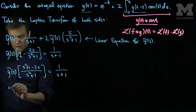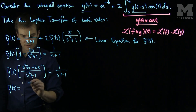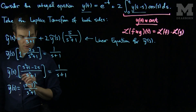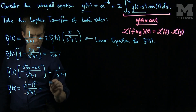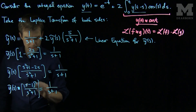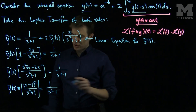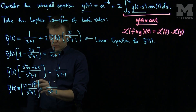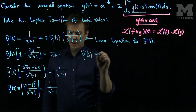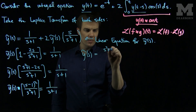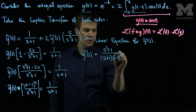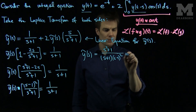We can simplify this. The numerator s squared plus 1 minus 2s factors as s minus 1 quantity squared. So y-tilde of s times s minus 1 squared over s squared plus 1 equals 1 over s plus 1. Dividing both sides gives y-tilde of s equals s squared plus 1 over the product of s plus 1 and s minus 1 squared. We'll now use partial fractions.